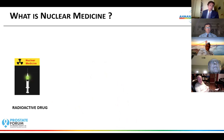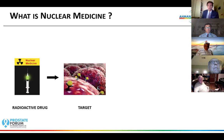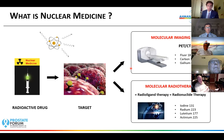That is what theranostics is, and it's perfect for nuclear medicine. Nuclear medicine is the medical use of radioactive drugs. You inject into the patient a molecule that seeks a known target. If you attach a radionuclide to it, you can use the emitted radiation either for targeted imaging with PET-CT or for targeted radiotherapy — also called molecular radiotherapy, radioligand therapy, or radionuclide therapy.